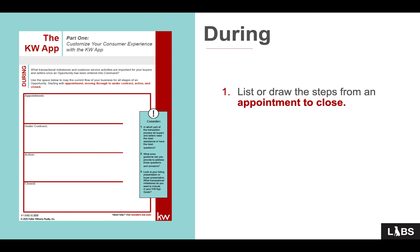You're going to need to continue with the transactional path that was started on the previous page — if you were with sellers the first time, stay with sellers on this one. This time, you're mapping out the flow of your business from appointment to closed transaction. List and draw all of the steps from the moment you have your appointment all the way to the closing table. Use companion worksheet page two — 'During' — broken into appointment, under contract, active, and closed. While you're doing that, pause the video and when you're ready to come back, we will continue.